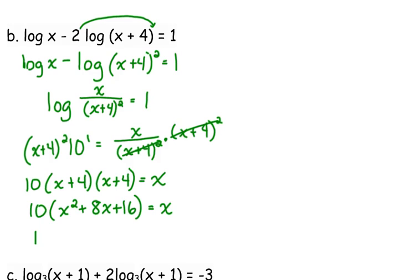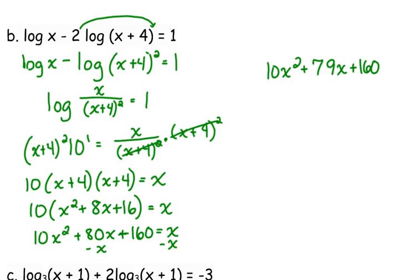Then we have to distribute the 10. 10x squared plus 80x plus 160. 10x squared plus 79x plus 160 is equal to 0.